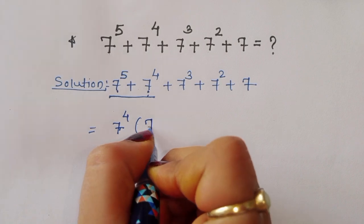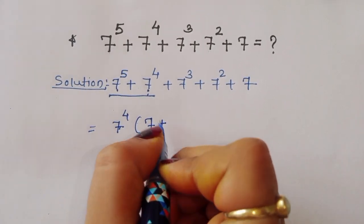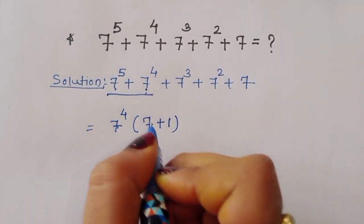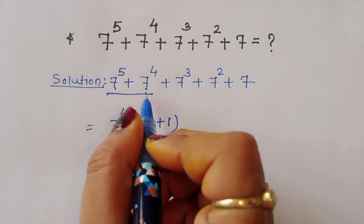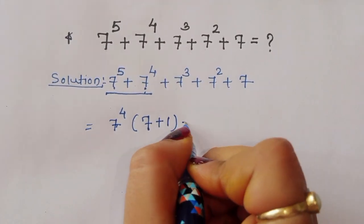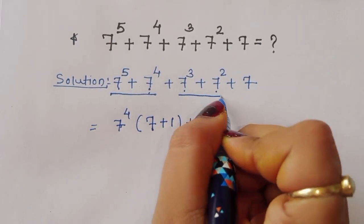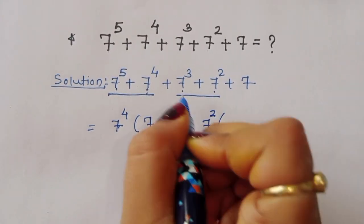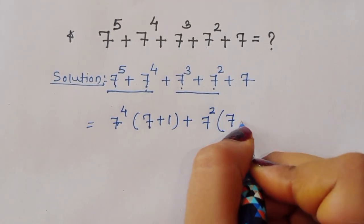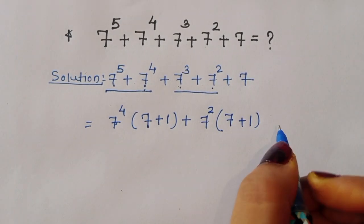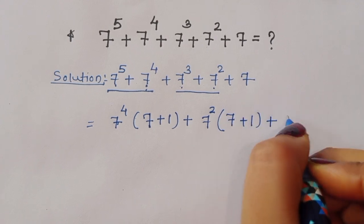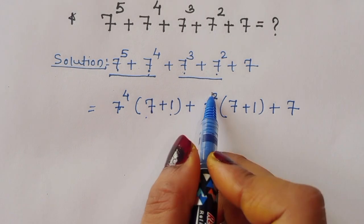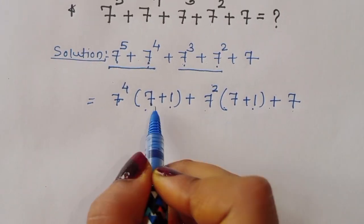After taking 7 power 4 common, we are left with 7 plus 1 in the bracket. Then for the remaining terms — 7 power 3 and 7 power 2 — we take 7 power 4 times (7 plus 1), and then 7 power 2 times (7 plus 1), and plus 7.